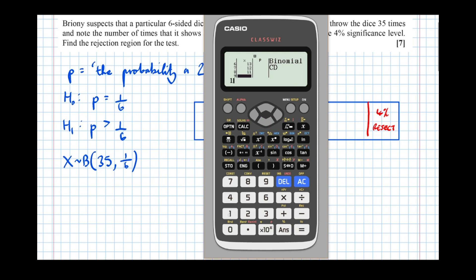12, 11, 10, 9, 8, 7, 6. And this is very much a trial and improvement process. There we go. Between 10 and 9 is where it crosses over the threshold.